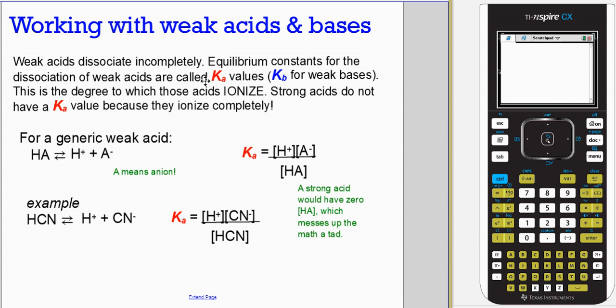We're going to use equilibrium constants to describe the degree to which a weak acid or base will dissociate. For acids we'll call it Ka. For bases we'll call it Kb. This is the degree to which acids or bases ionize. Strong acids and bases don't have a Ka value. Actually, typically we'll say they have a Ka greater than 1, which makes them strong, which means we don't use it.